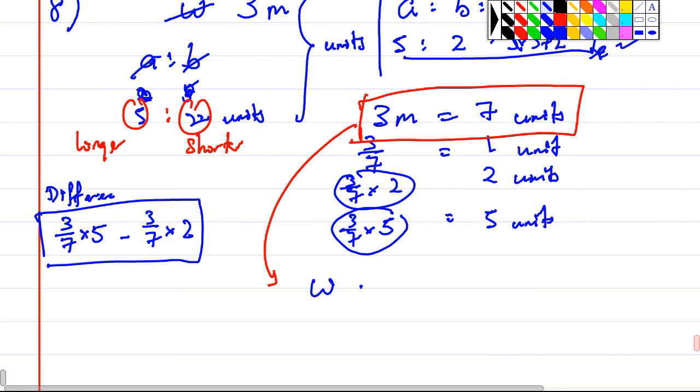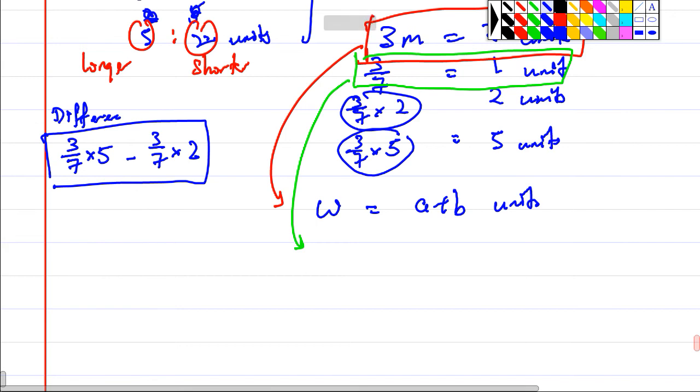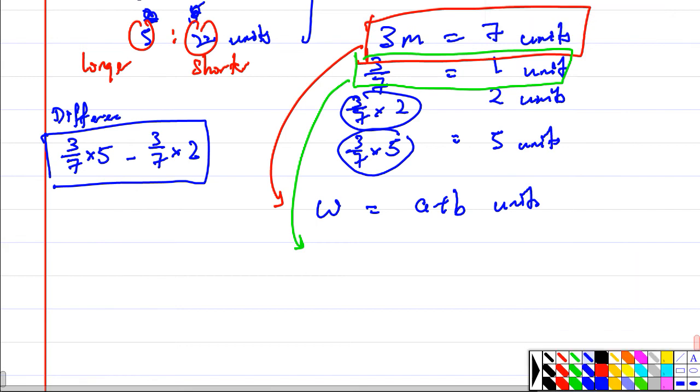W equals A plus B units. Can follow? Now what's the next step? Not the green box. W equals A plus B - it totally makes sense. This is one unit. Can follow? Next step, change color box.